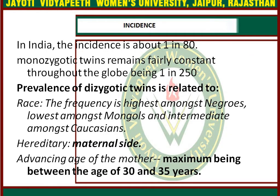In India, the incidence of twins is about 1 in 80. Monozygotic twins remain fairly constant throughout the globe at around 1 in 250. The prevalence of dizygotic twins is related to race: the frequency is highest among Negroes, lowest among Mongols, and intermediate among Caucasians. The Indian population falls under Caucasians.